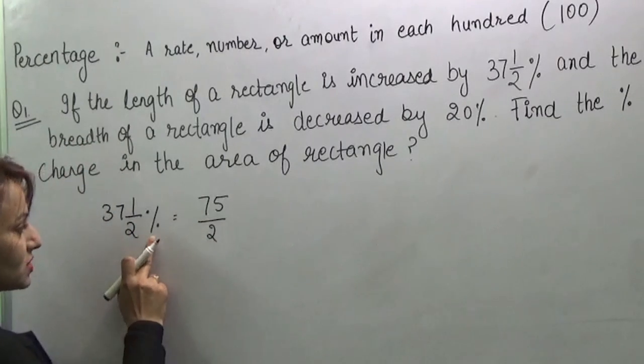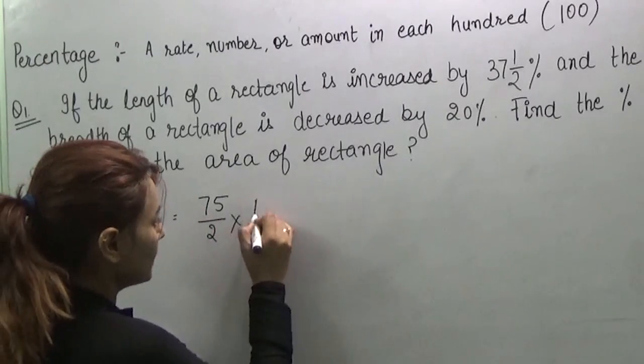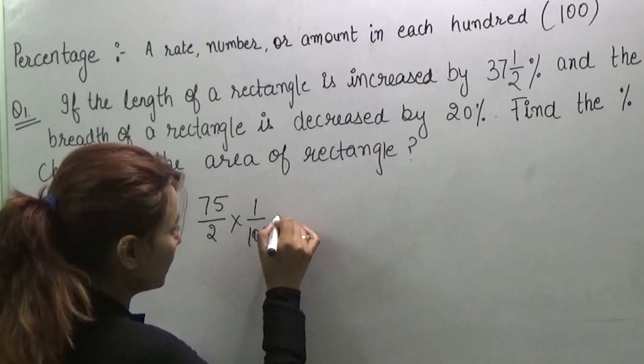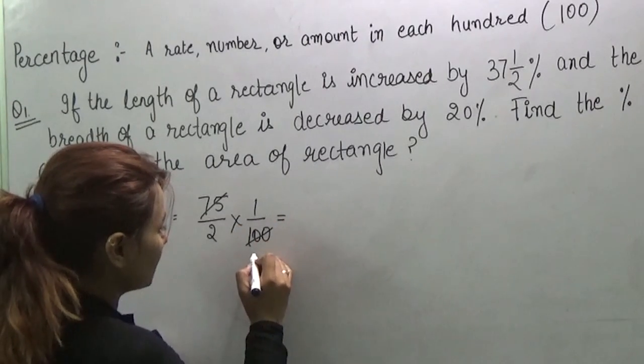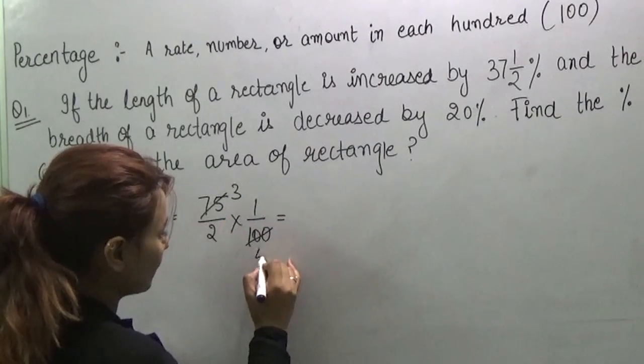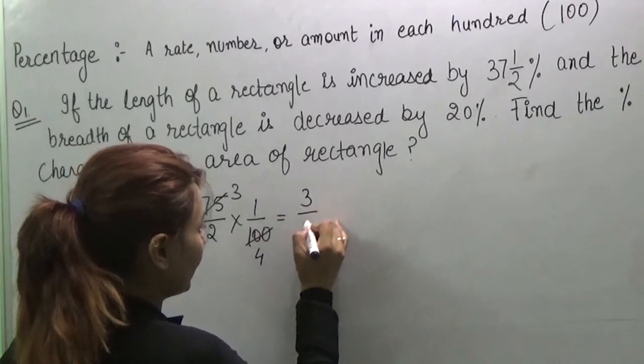But here we have percentage inside, so we will put 100 earlier and when we solve this portion, we will find 3 and here we will find 4. So 3 by 8.